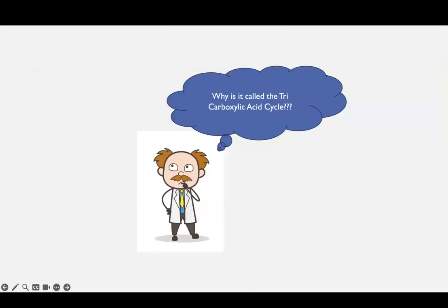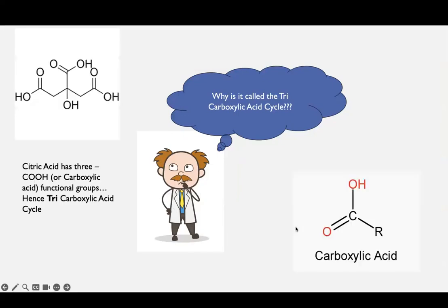So why is it called the tricarboxylic acid cycle? It's called that because citric acid has three carboxylic acid functional groups, or COOH. You can see here's your carboxylic acid — that means oxygen double bonded to carbon, and then a hydroxide ion single bonded to carbon. We can see that there are three of those: here's one, here's two, and three. So that's why it's called the tricarboxylic acid cycle.